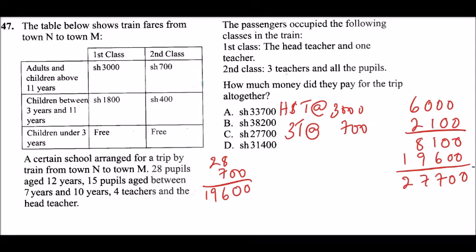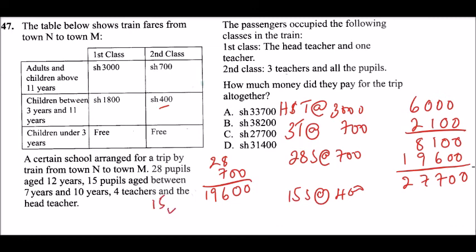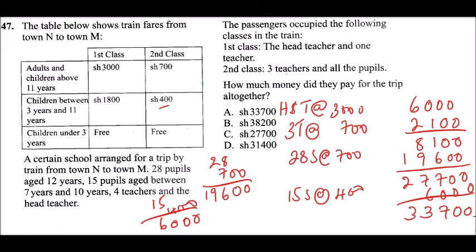The 15 pupils aged between 7 and 10 fall in the 3-to-11-years category, so they pay 400 each in second class. 15 × 400 = 6,000. Adding 6,000 to 27,700 gives a final total of 33,700.